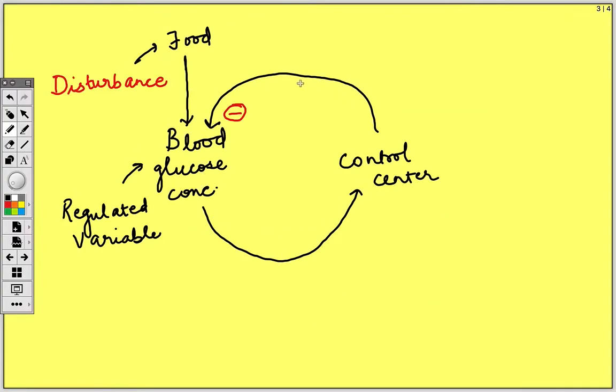This is the normal negative feedback control system where once food is eaten it is absorbed via gastrointestinal tract and it causes rise in blood glucose concentration which is sensed and the blood glucose concentration is brought back to normal.